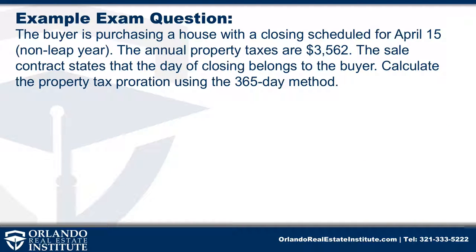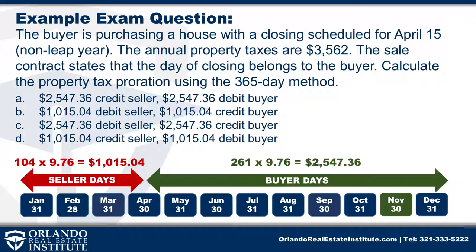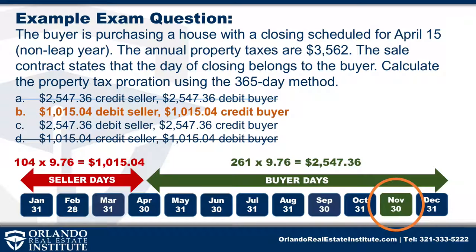Now we need to figure out the debit and the credit and who gets it. The tax bill comes out November 1st. So when the seller lived there, the seller didn't have the bill for the taxes yet — the buyer is going to get the bill, including for the time period the seller lived there. So on the closing statement, it's going to be a debit to the seller and a credit to the buyer, because the seller is going to owe the buyer. We can instantly get rid of answer choices A and D, because it can't be a credit to the seller in this case. It's going to be debit seller, credit buyer. How much does the seller owe the buyer? That's $1,015.04. So the correct answer would be B: $1,015.04 debit seller and $1,015.04 credit to the buyer. That's how it will appear on the closing statement.